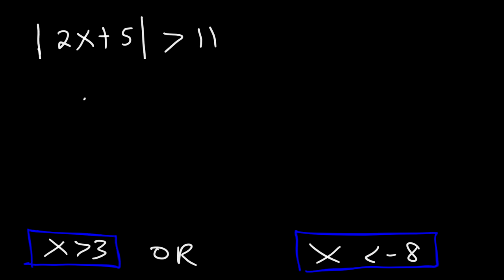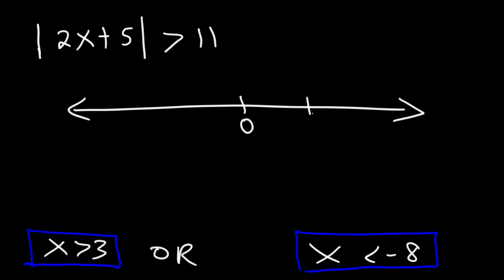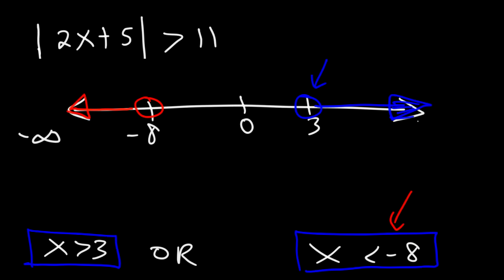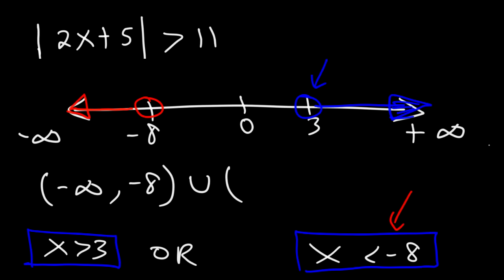Now let's graph this on a number line with 0, 3, and negative 8 marked. We have x is greater than 3 but not equal to it, so we draw a line to the right with an open circle. For x less than negative 8, we draw the arrow to the left, also with an open circle. We can represent our solution using interval notation: x could be anywhere from negative infinity to negative 8, union, 3 to positive infinity. With infinity symbols, always use parentheses. Open circles also use parentheses; closed circles use brackets.